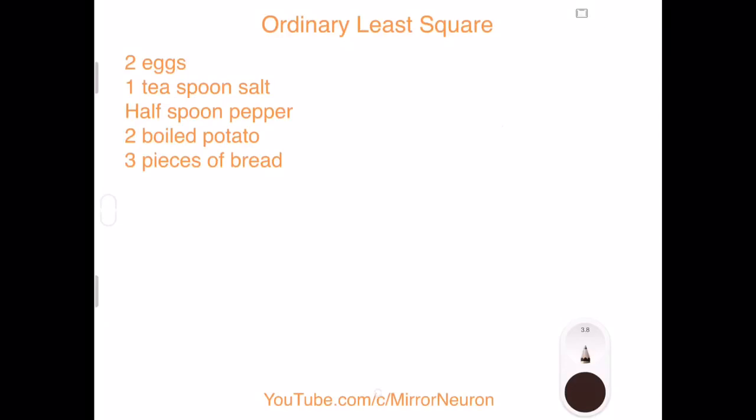So the topic is loss function. But before we jump onto that, let's discuss how to make some recipe. I'm just kidding. So say for example, your grandma made a very tasty dish. She used two eggs, one teaspoon of salt, half spoon of pepper, two boiled potatoes, and three pieces of bread. It was so tasty that you promised her that on her next birthday you are going to prepare the same dish for her.